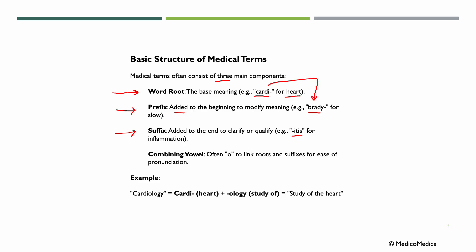Cardi and brady could become bradycardia. Cardi and itis could be carditis, meaning inflammation of the heart. Bradycardia would be slow heart rate. We also use vowels when combining different words. Often, we use the vowel O to link roots and suffixes for ease of pronunciation. So we have cardi for heart, and logi, which means the study of something. Adding the vowel O, we have cardiology — the study of the heart.